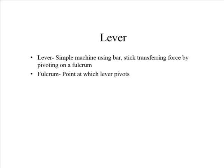The first kind of simple machine is a lever. A lever is simply a simple machine that uses a bar, or a stick, or some sort of rigid object to transfer force by a fulcrum that it pivots on. A fulcrum is simply a place in which a lever pivots. We can draw a lever as a rigid bar, and the fulcrum is a place in which it pivots, usually drawn as a triangle.